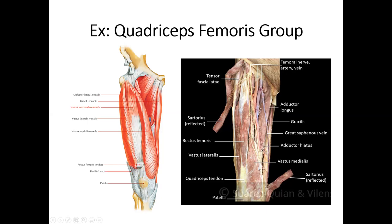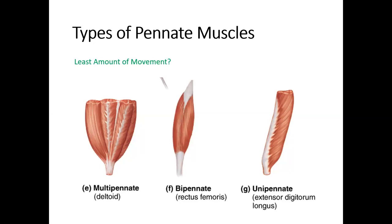The quadriceps need a lot of power, so they maximize the number of muscle fibers. There are three types of pinnate muscles: multipinnate, bipinnate, and unipinnate. The name comes from the number of central tendons. Multipinnate has multiple central tendons — more like a collection of different muscle parts within one single muscle. Bipinnate has two central tendons, one on each side. Unipinnate has just one central tendon, so all the fibers fan into that single tendon.